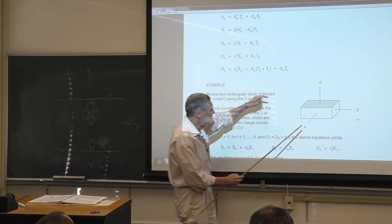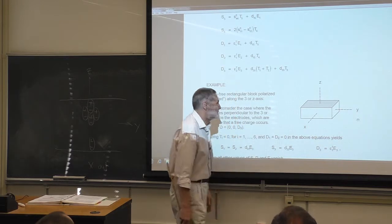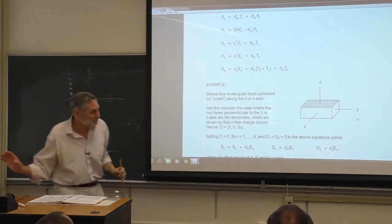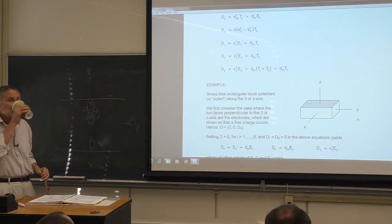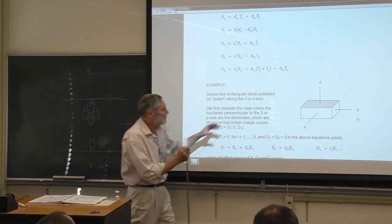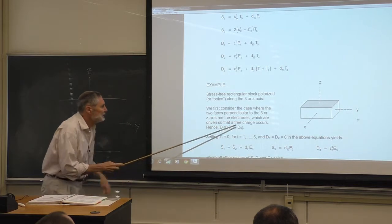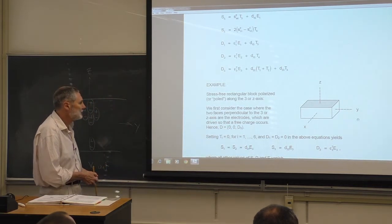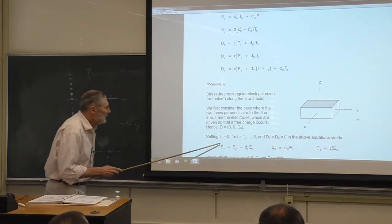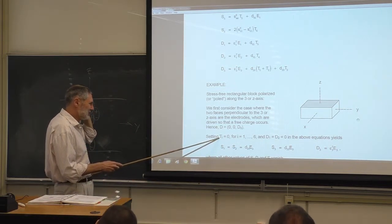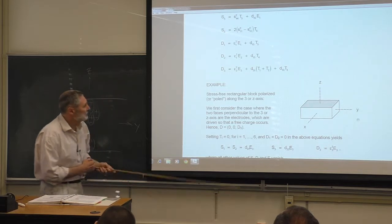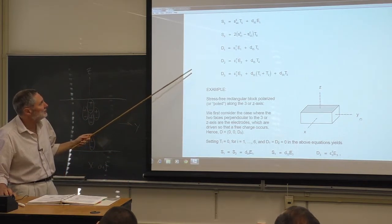We're going to imagine driving this — putting an oscillating voltage across the two plates in the three direction. We'll be oscillating the free charge on there. So there will be a D₃ component, but there won't be D₂ or D₁ because there's no free charge flowing in those directions — only in z. We have zero stress, so all six elements of the stress vector are zero. Substituting those zeros into the equations, plus the fact that D₁ and D₂ are zero, this all collapses down to something quite simple.